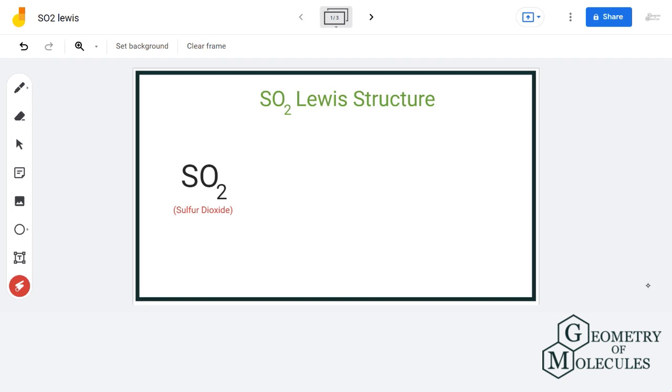Hello guys, welcome back to our channel. In this video we will discuss the Lewis structure of SO2, the chemical formula of sulfur dioxide. For determining its Lewis structure, let us count the total number of valence electrons.